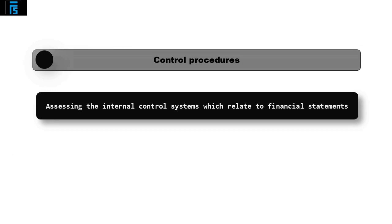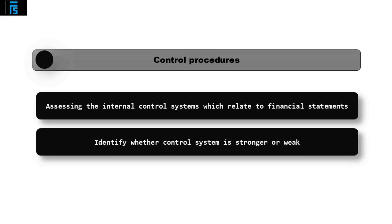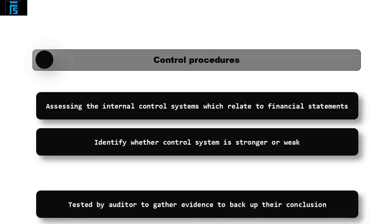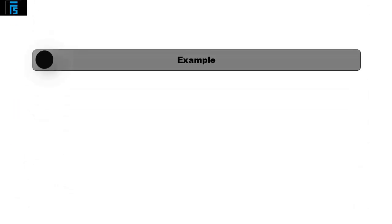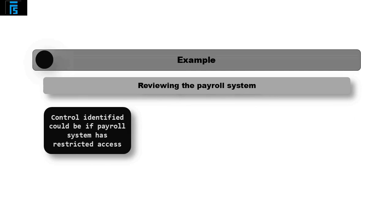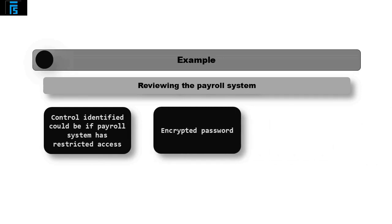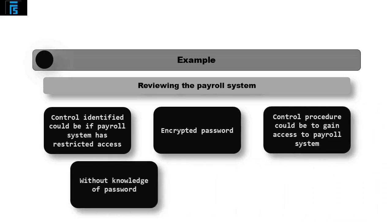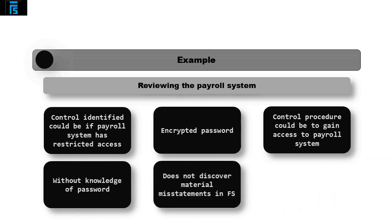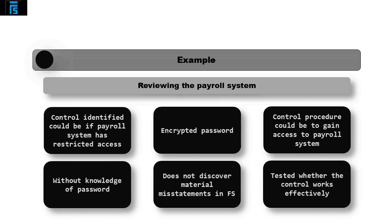Control procedures are carried out when an auditor is assessing the internal control systems relating to the financial statements. The auditor has a responsibility to identify whether the control system is strong or weak. An example would be when reviewing the payroll system — a control identified could be that the payroll system has restricted access with an encrypted password. A control procedure could be, with permission from the client, attempting to gain access without knowledge of the password, to test whether that control works effectively.